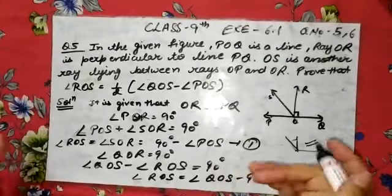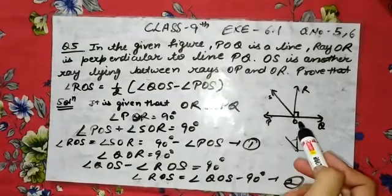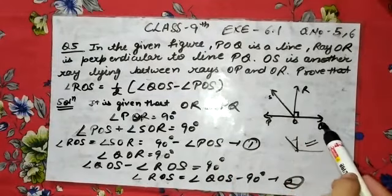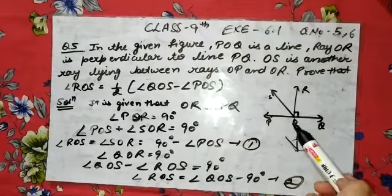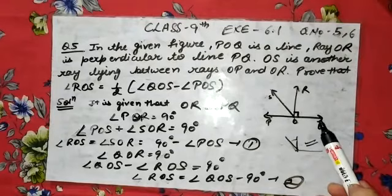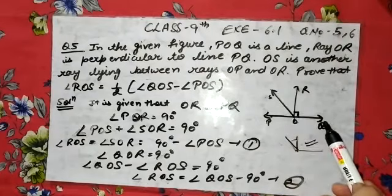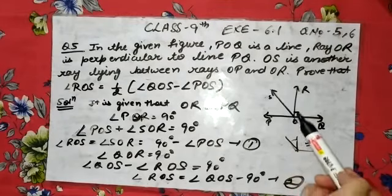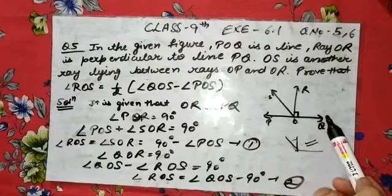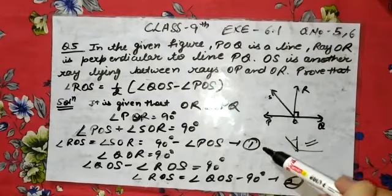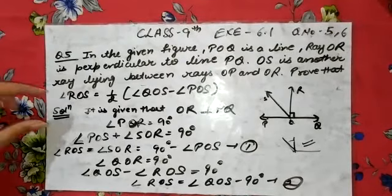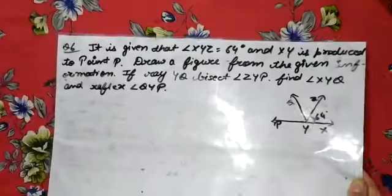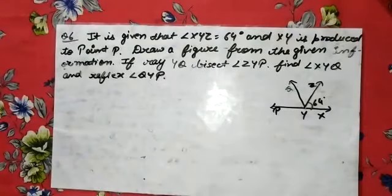So QOS is also 90 degrees, and I wrote it in terms of SOQ, that is SOQ minus SOR, which is your ROQ. Then we formed both equations and added them, and after that you get your final result. Now let us talk about question number 6.